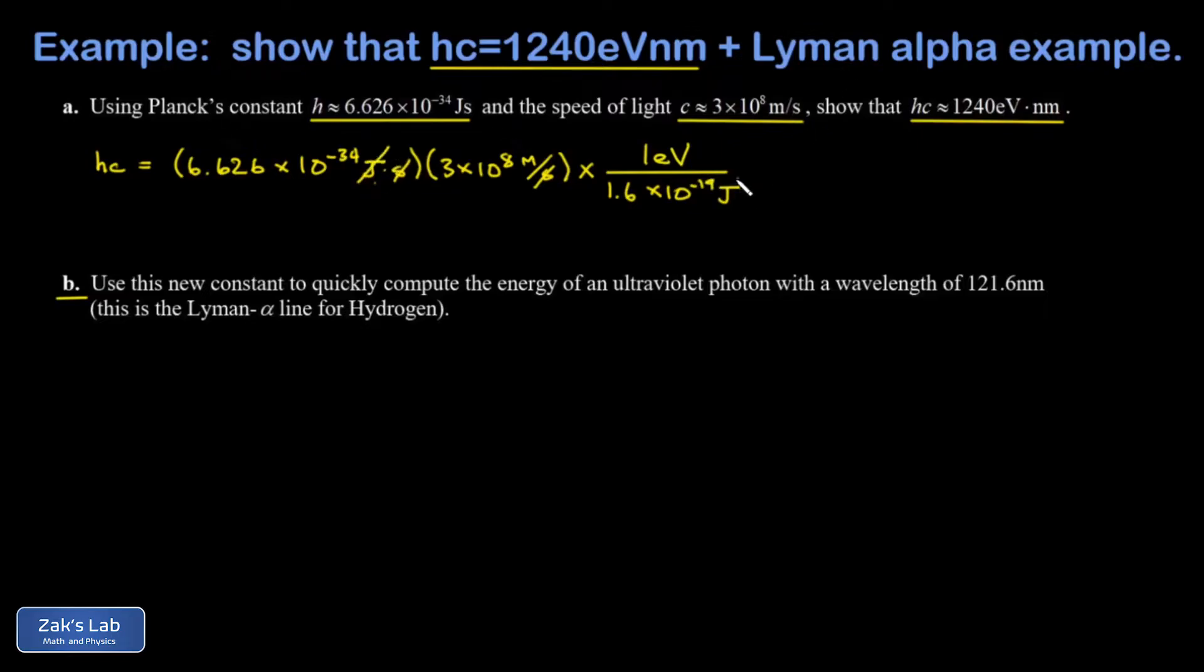So my joules are gone and transformed to eV. All I have to do now is transform my meters to nanometers. I need a factor of meters in the denominator. And every meter is a billion nanometers, or 10 to the ninth nanometers. So we've transformed to units of eV nanometers.